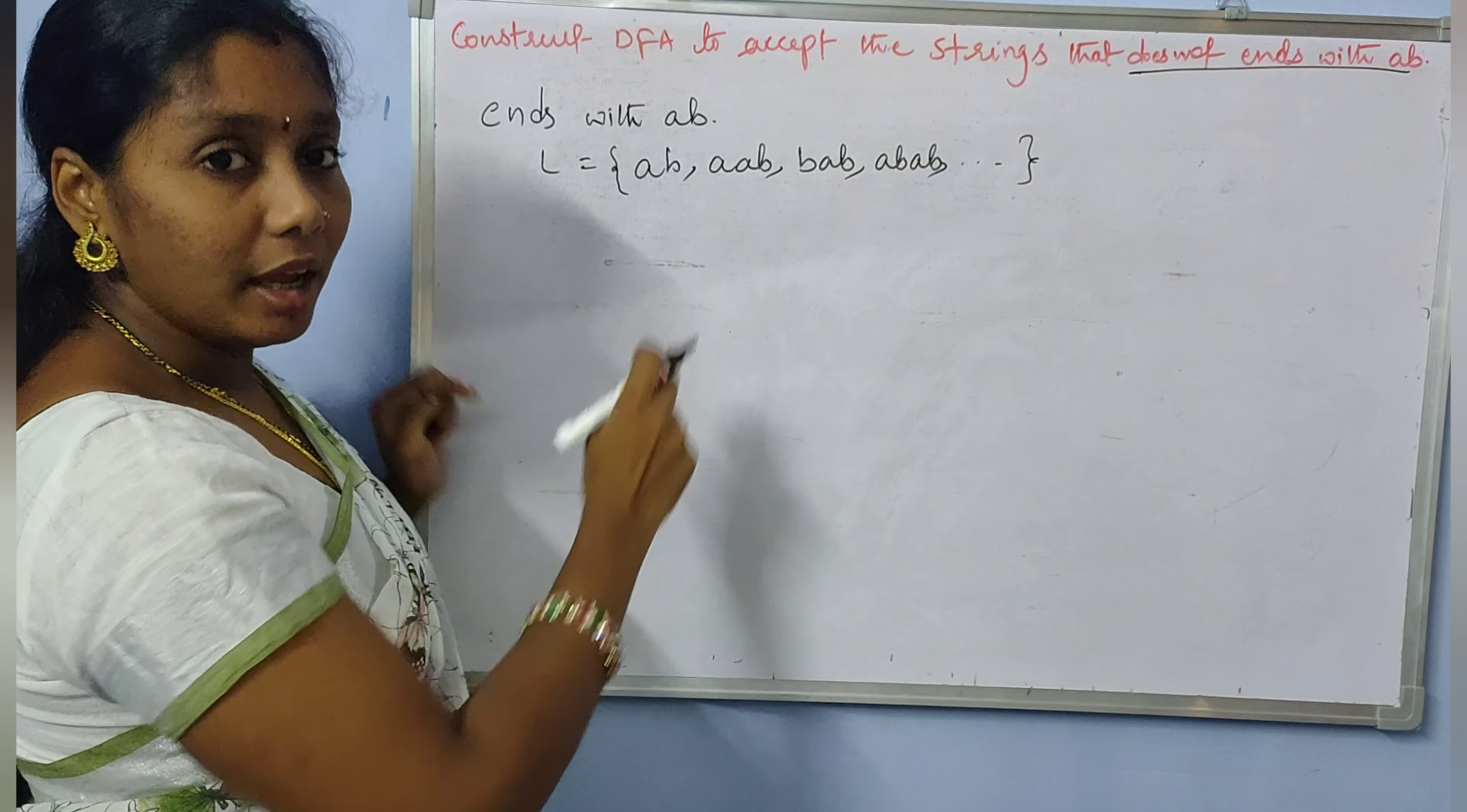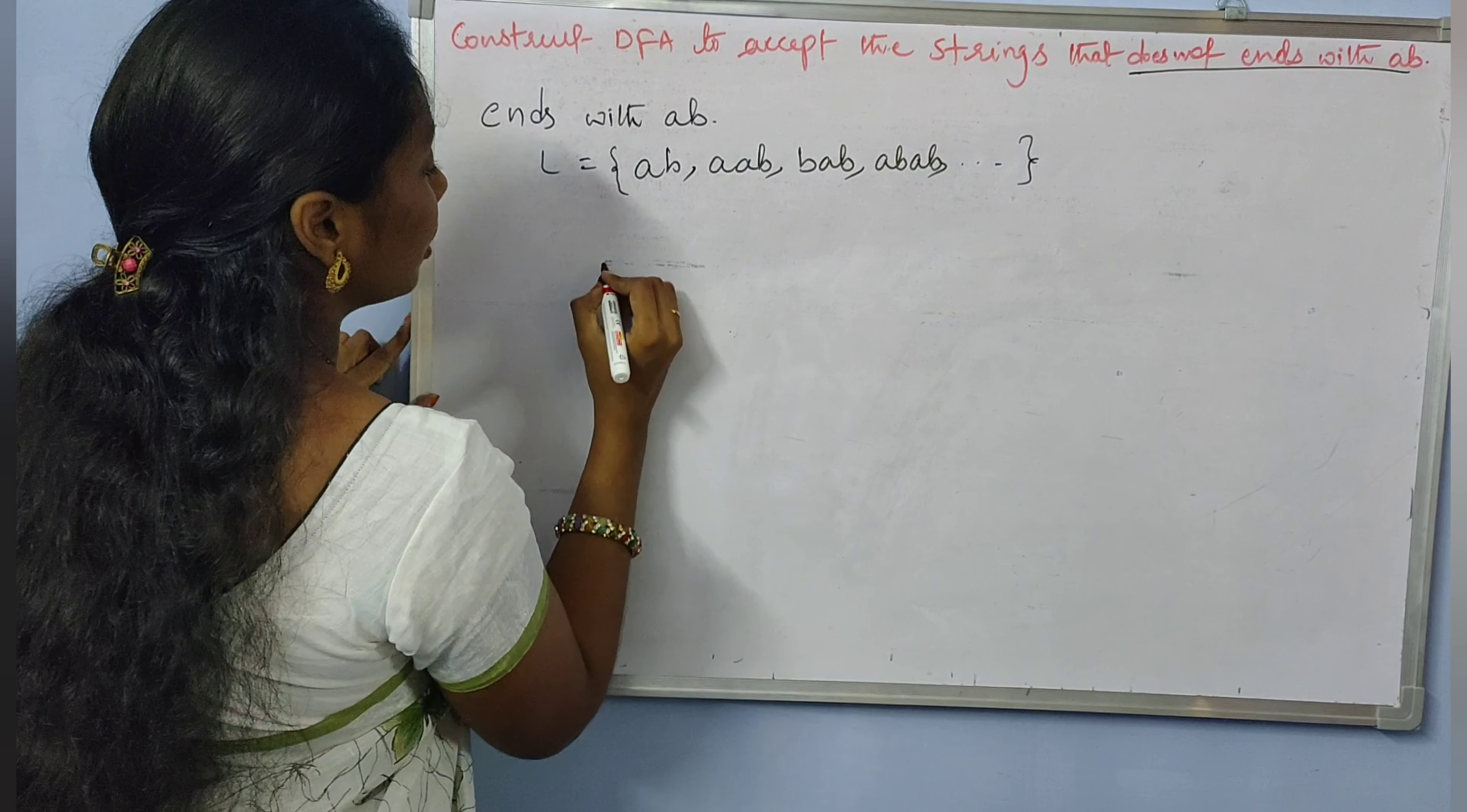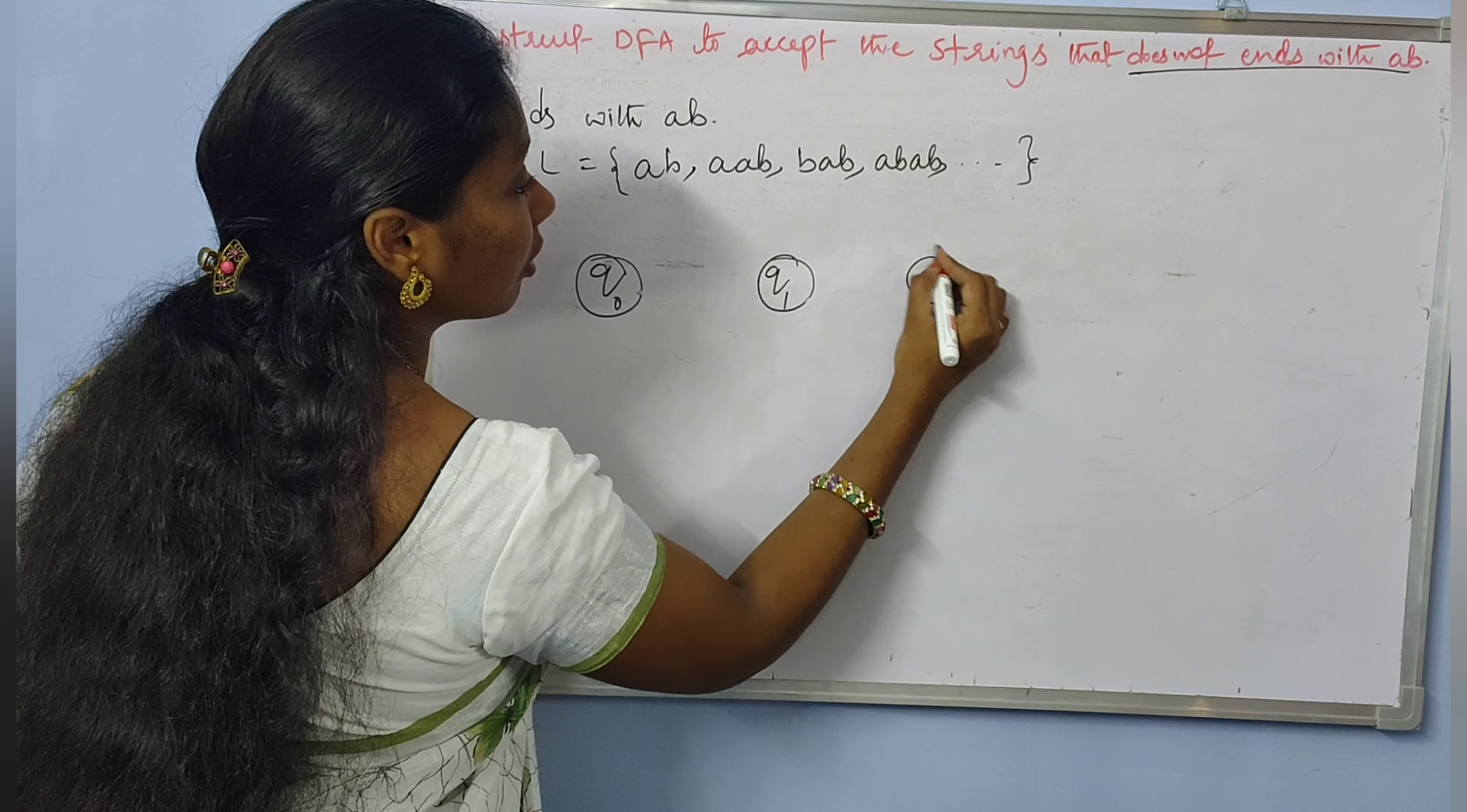The minimal string is AB and the length of the minimal string is 2. So the DFA should have a minimum of 3 states. So here we are having Q0, Q1, Q2.